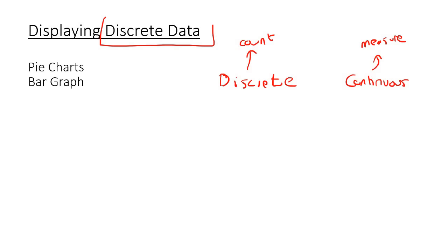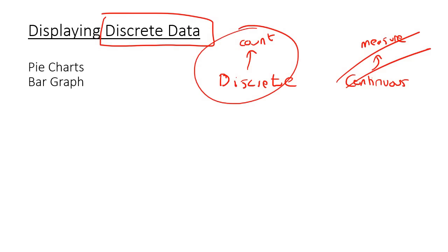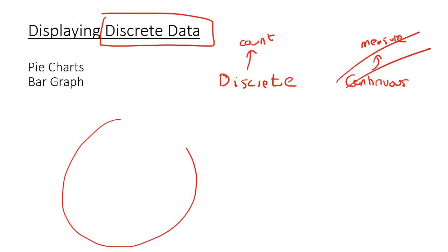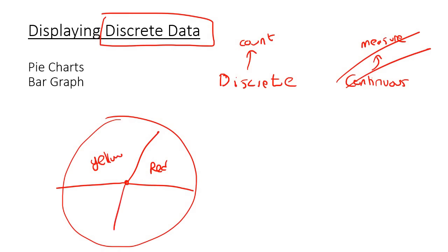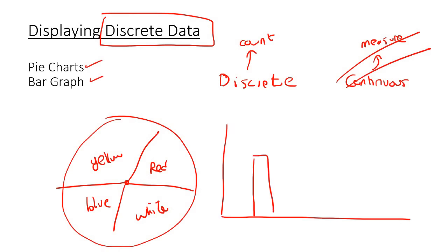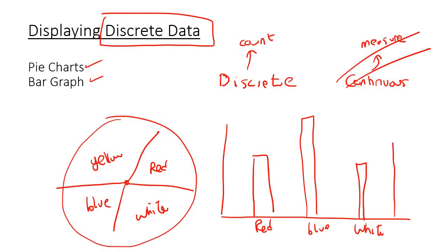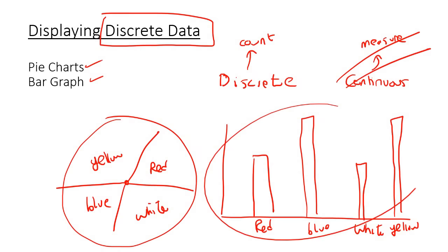In this lesson we're going to focus more on discrete data — the ones that we count — and we're going to learn how to show that. For example, if we're counting cars, we can show it on a pie chart with red, yellow, blue, and white cars. We could also show it on a bar graph, where there's always a gap at the beginning and a gap in between the bars. So we're going to look at how to do a pie chart and a bar graph.